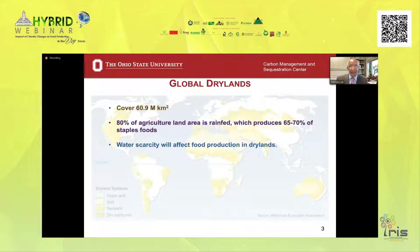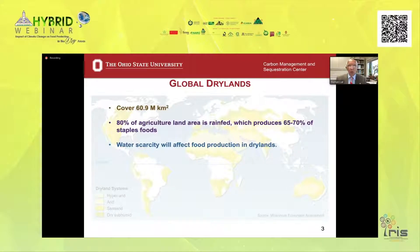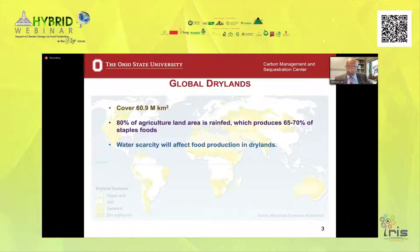Desertification is a serious problem. UNCCD has promised to achieve land degradation neutrality by 2030 — I wish them luck and hope it will be achieved, but it's right now not on track. Water productivity is the key factor. Increasing water productivity — more crop per drop — is the key strategy. Soil is the best reservoir to store green water, which is the available water to plants. Therefore, restoring soil health is essential to increasing water productivity and mitigating drought.